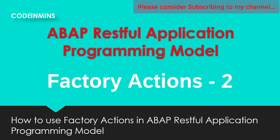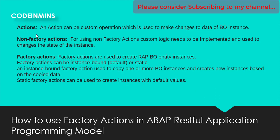In this video we are going to see how we can implement static factory actions in a RAP RESTful application programming model. This video is Part 2 of factory actions, in which we have seen instance-bound factory action in our previous video, where we saw how to use a copy functionality on an existing record. When using instance-bound factory action, one or more business object instances can be copied and it creates a new instance based on the copy data.